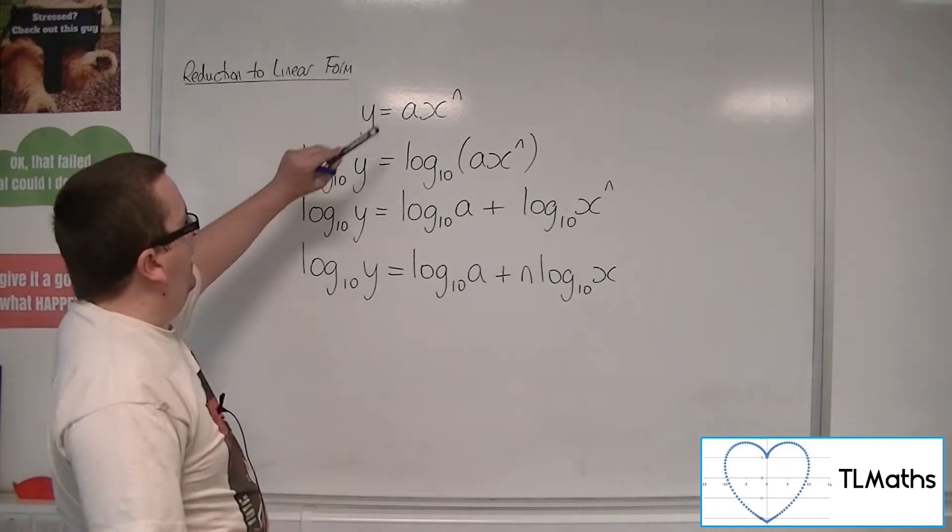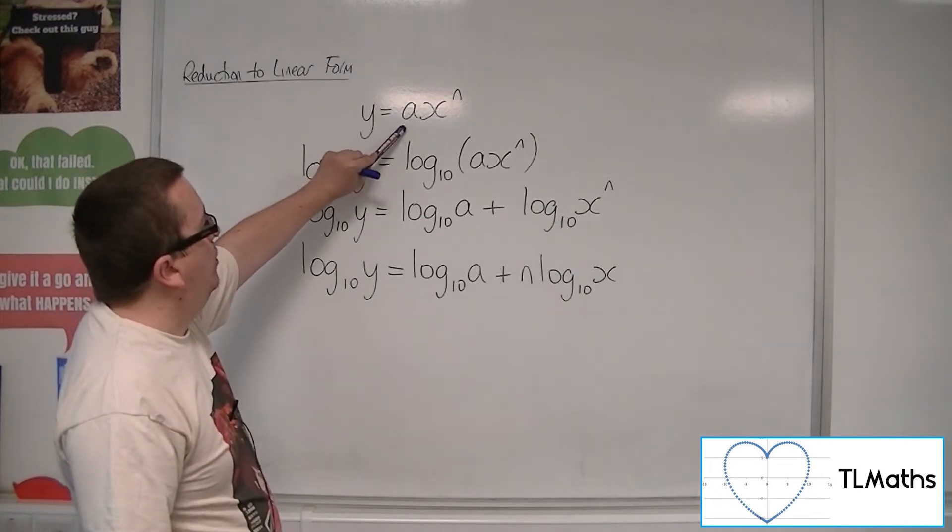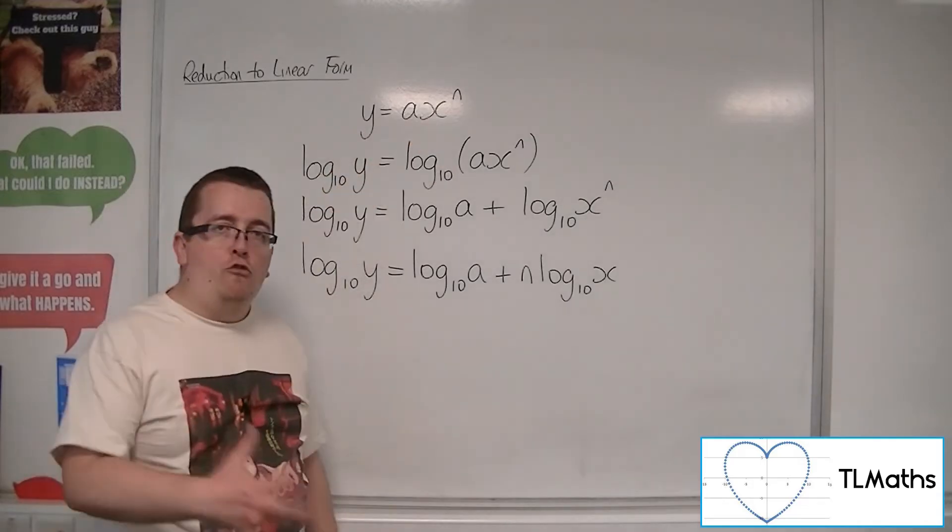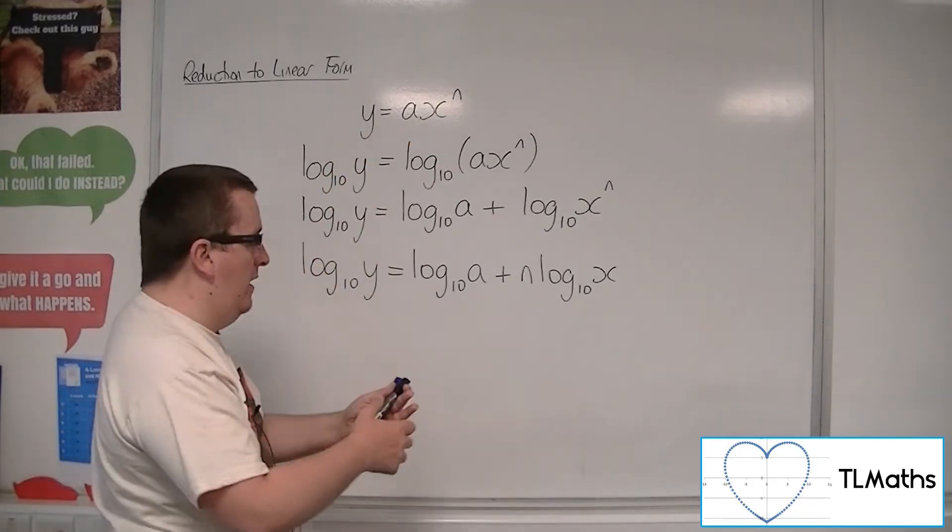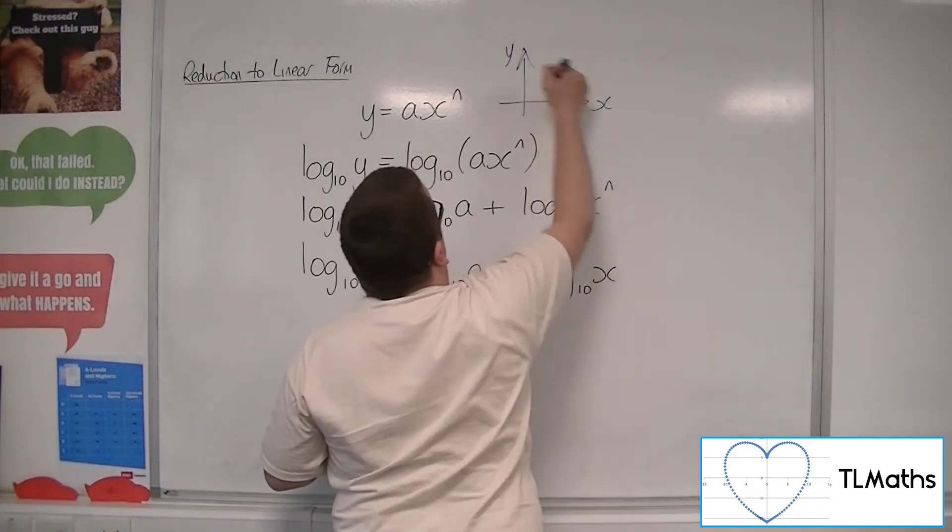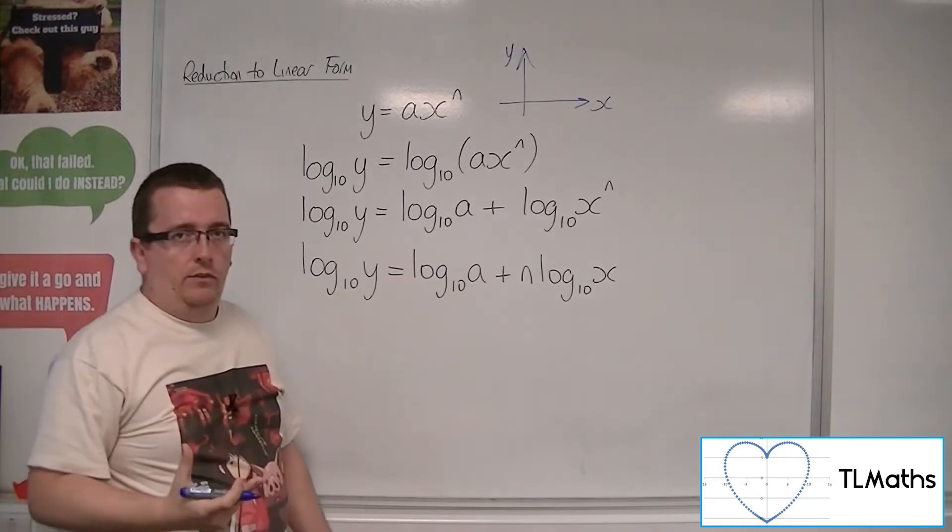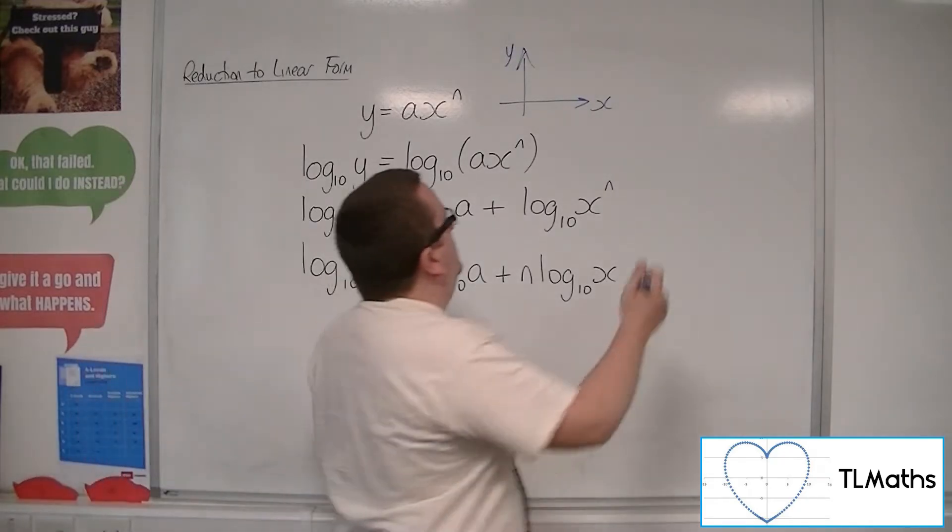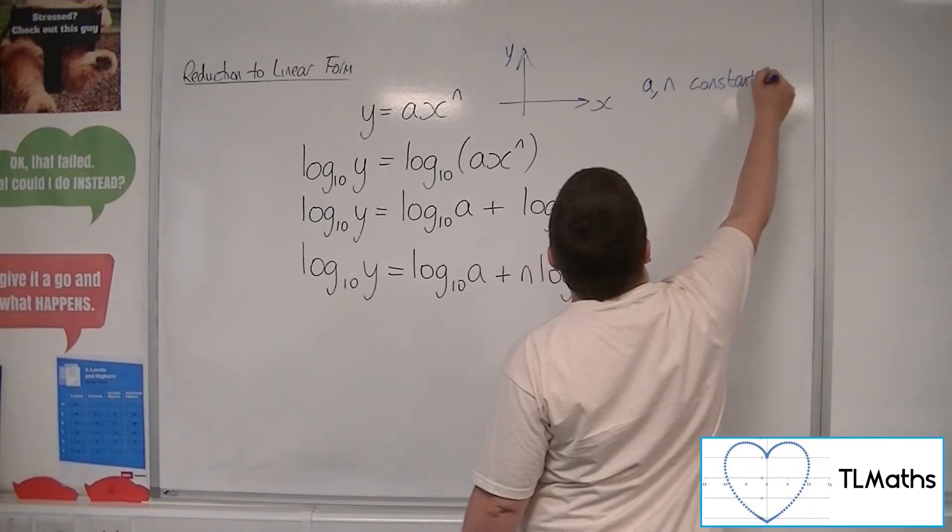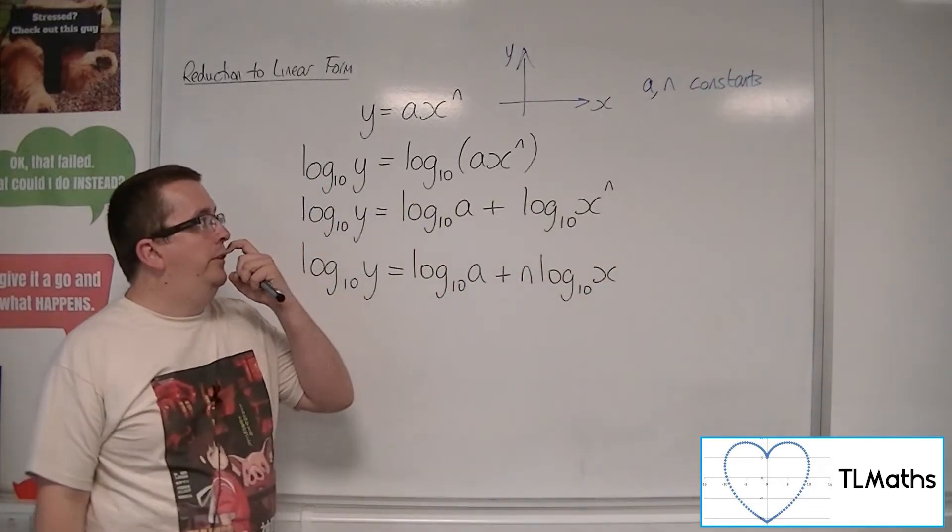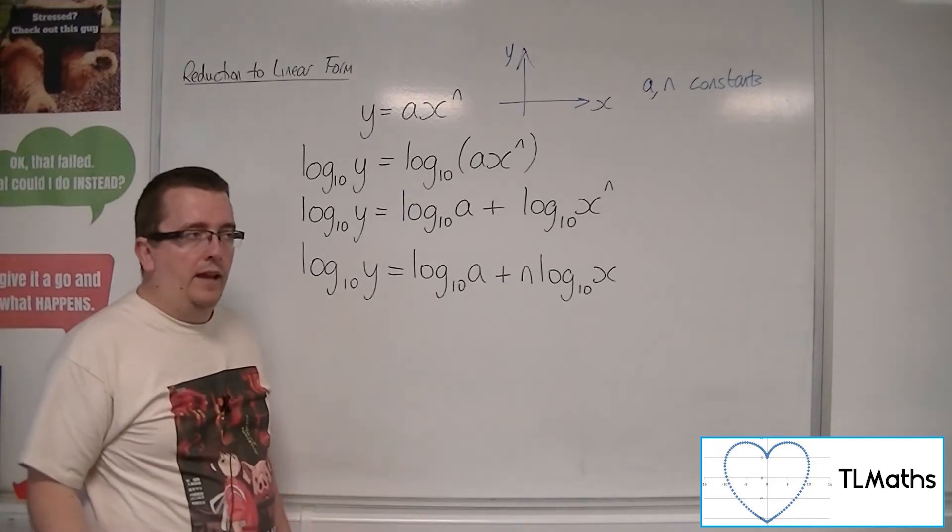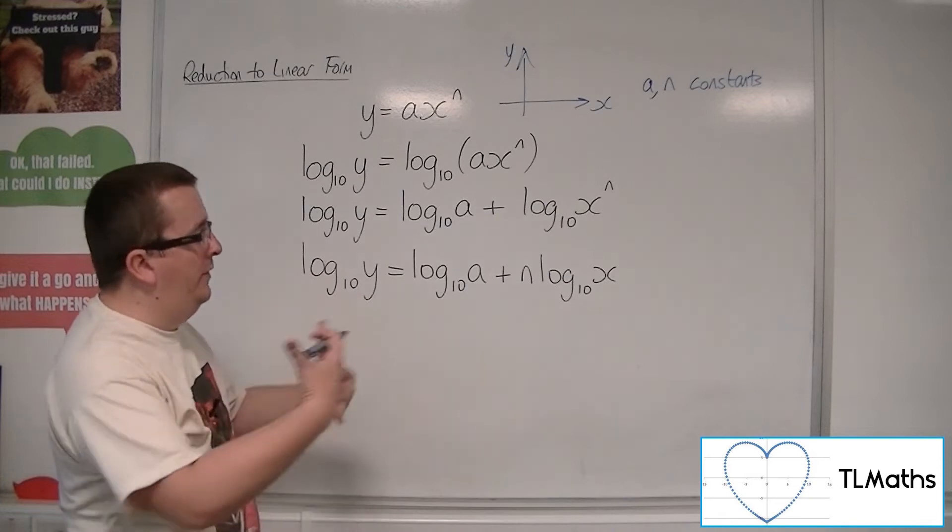Now, if we think back to this original curve equation here, x and y are variables. They are, on our graph, the horizontal and vertical axis. The a and the n are constant. They're constants. They remain fixed. Even though we don't know what they are, they remain fixed. And they behave like fixed elements.